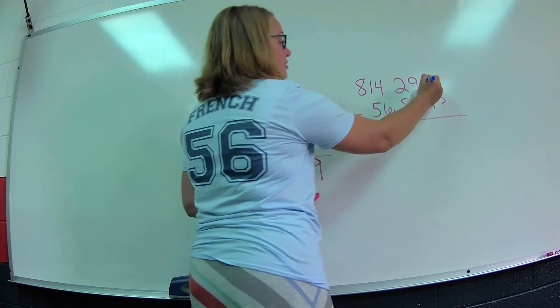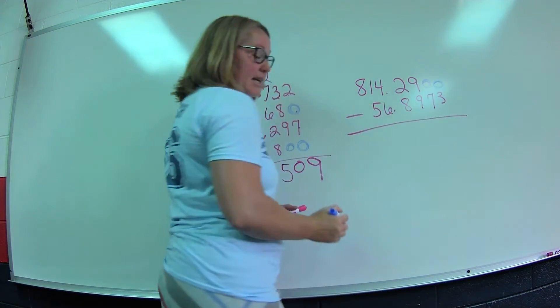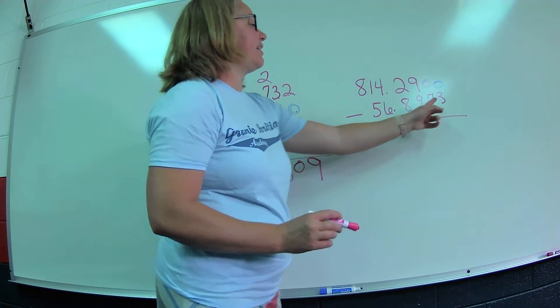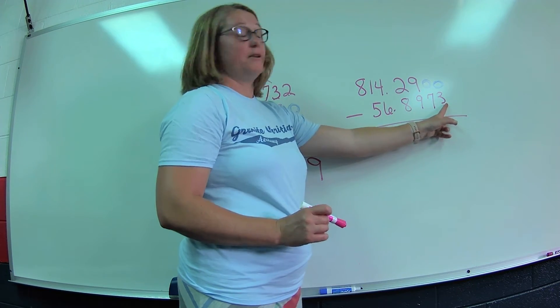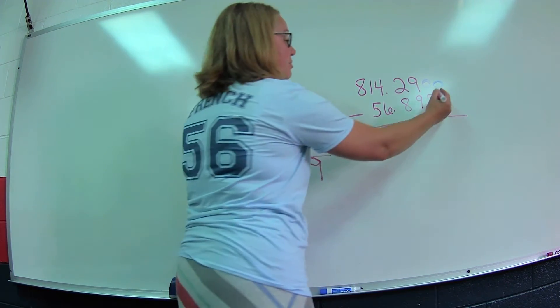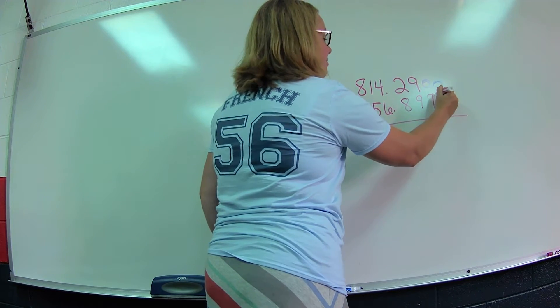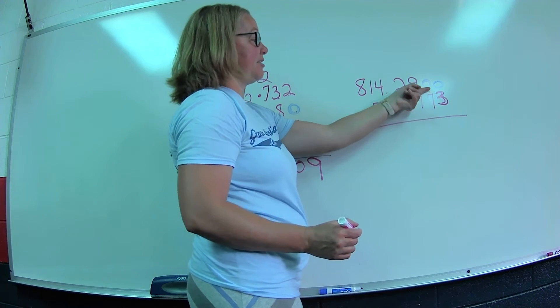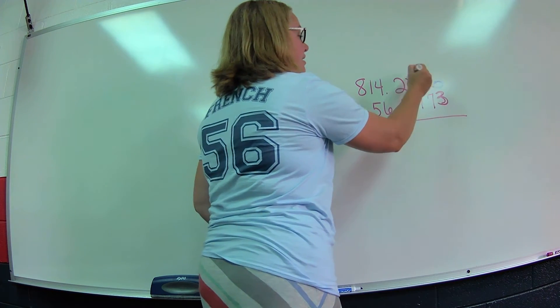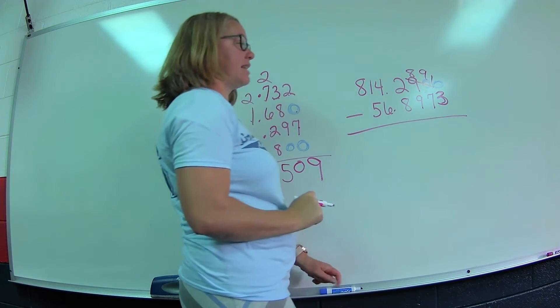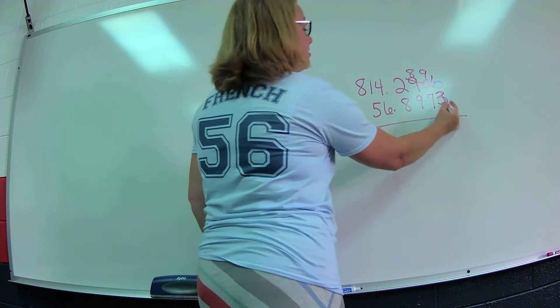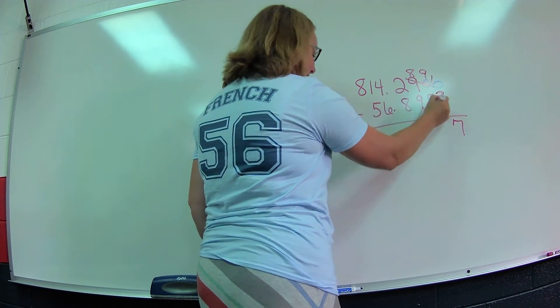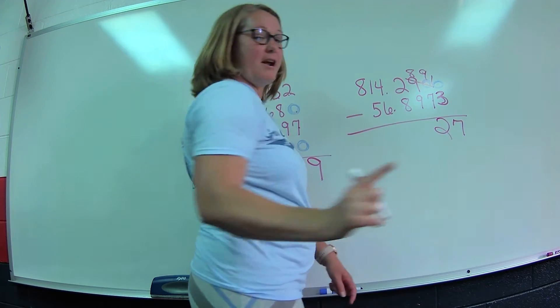Let's do our subtraction problem. Again, I want to have the same number of digits, so I need to put a zero and a zero. That zero does not change the value. We need to start here at the ten-thousandths. I can't take three from zero, so I'm going to borrow from the next whole number. Make that an eighty-nine, make that a ten. Ten minus three is seven, nine minus seven is two.